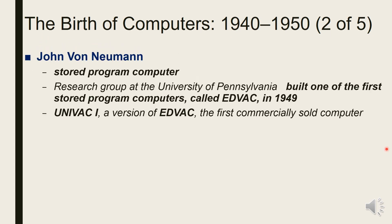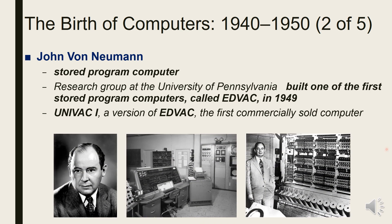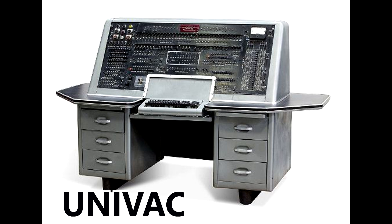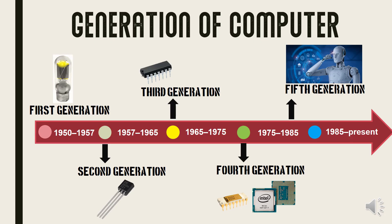John Von Neumann proposed a radically different computer design based on a model called the Stored Program Computer. A research group at the University of Pennsylvania built one of the first stored program computers called EDVAC, or Electronic Discrete Variable Automatic Computer, in 1949. UNIVAC-1, or Universal Automatic Computer — a version of EDVAC — was the first commercially sold computer.